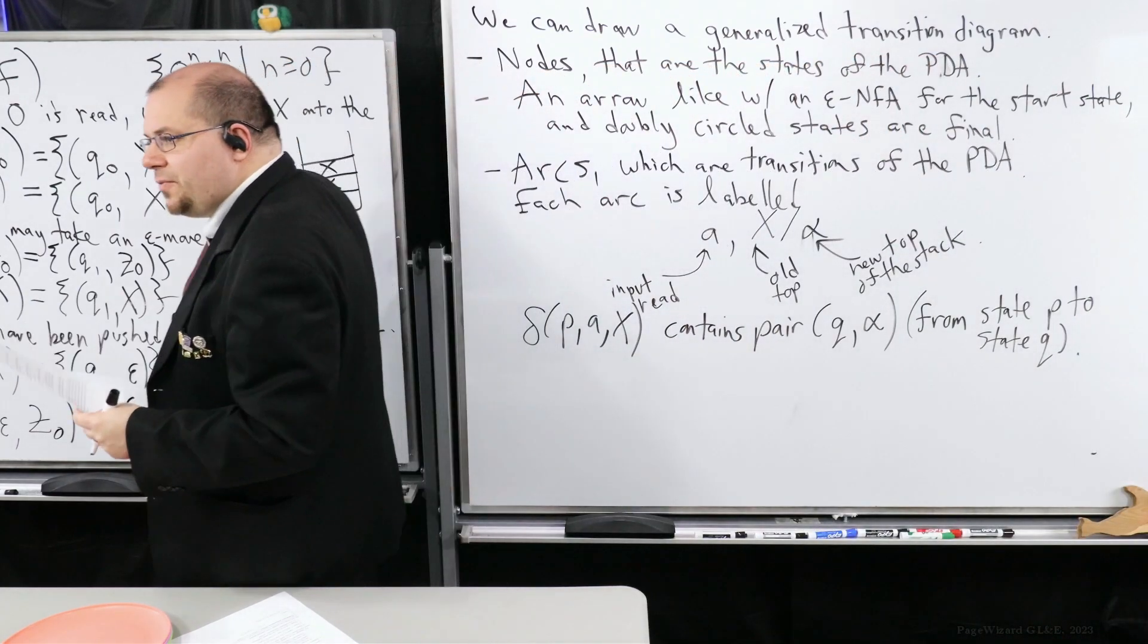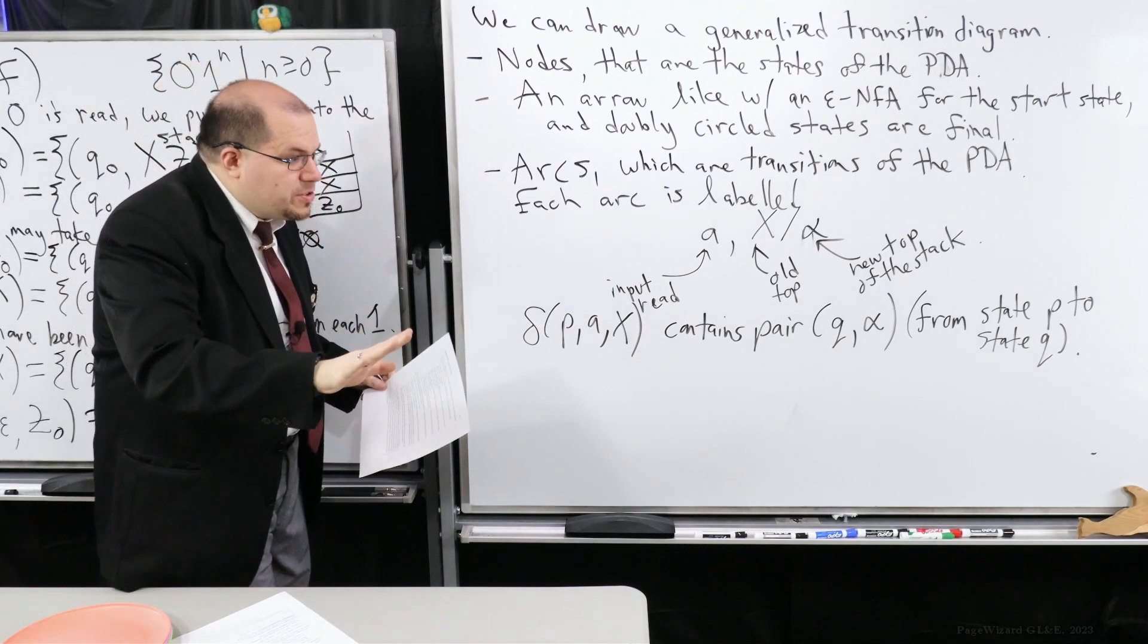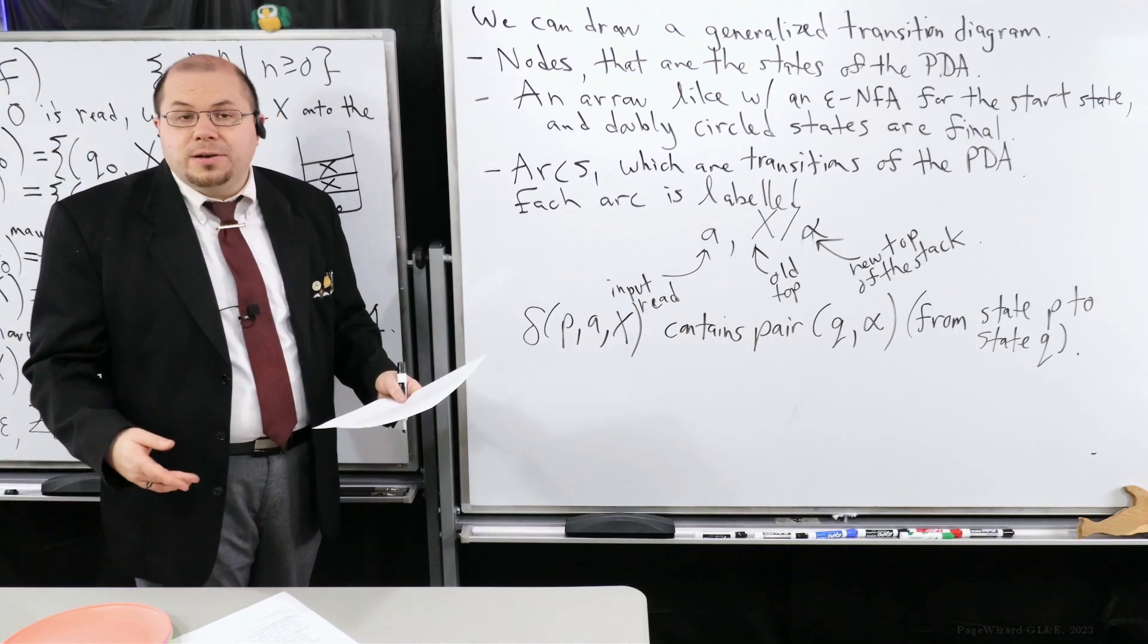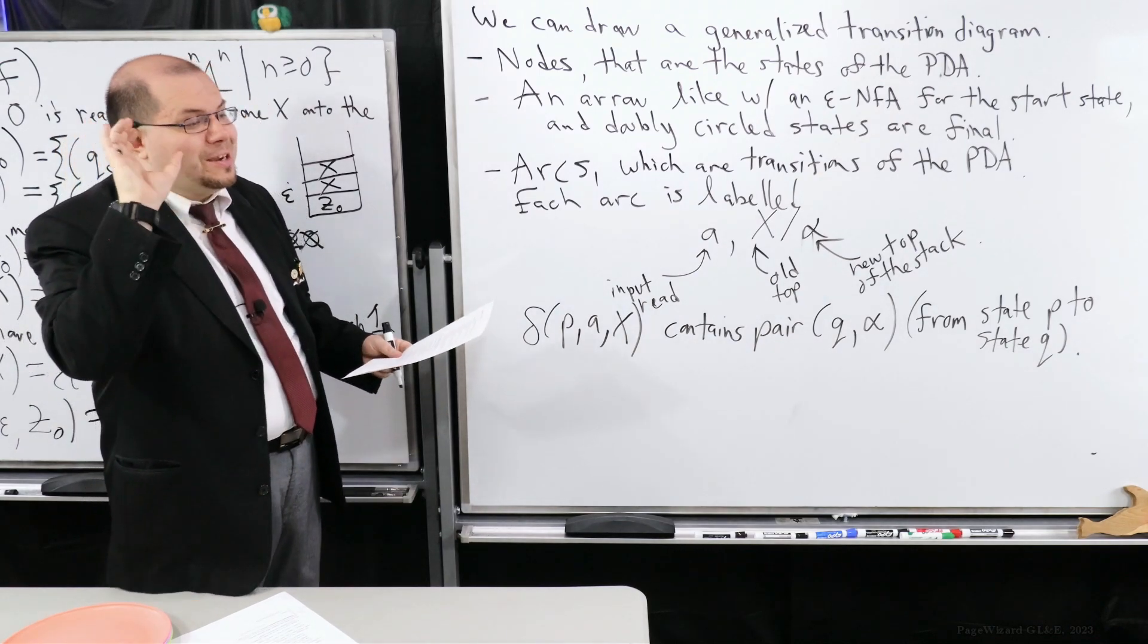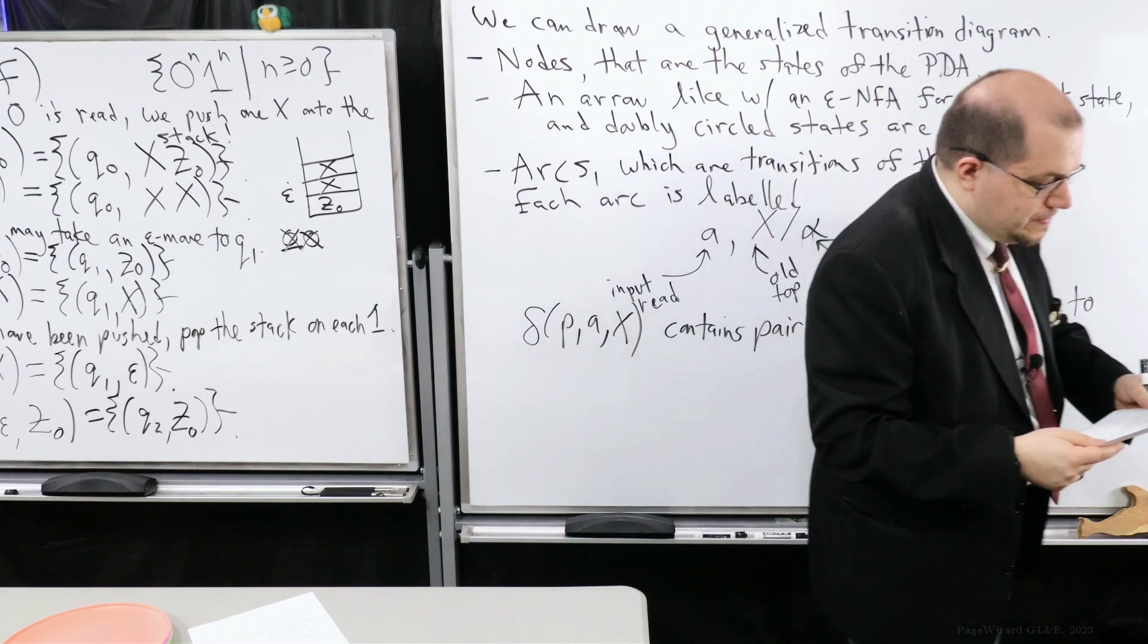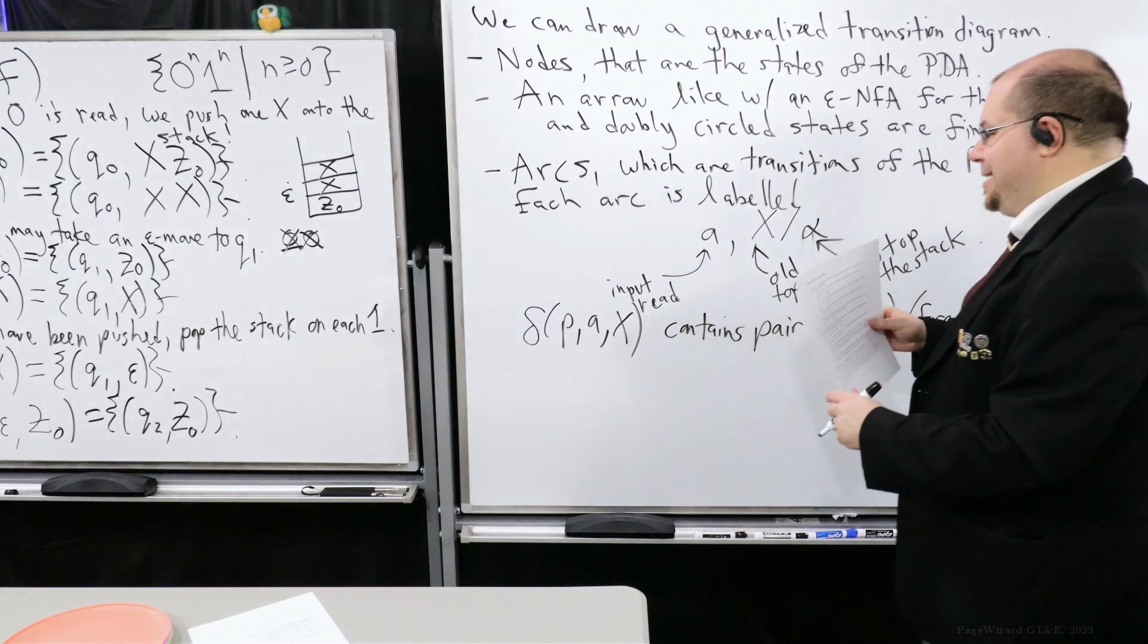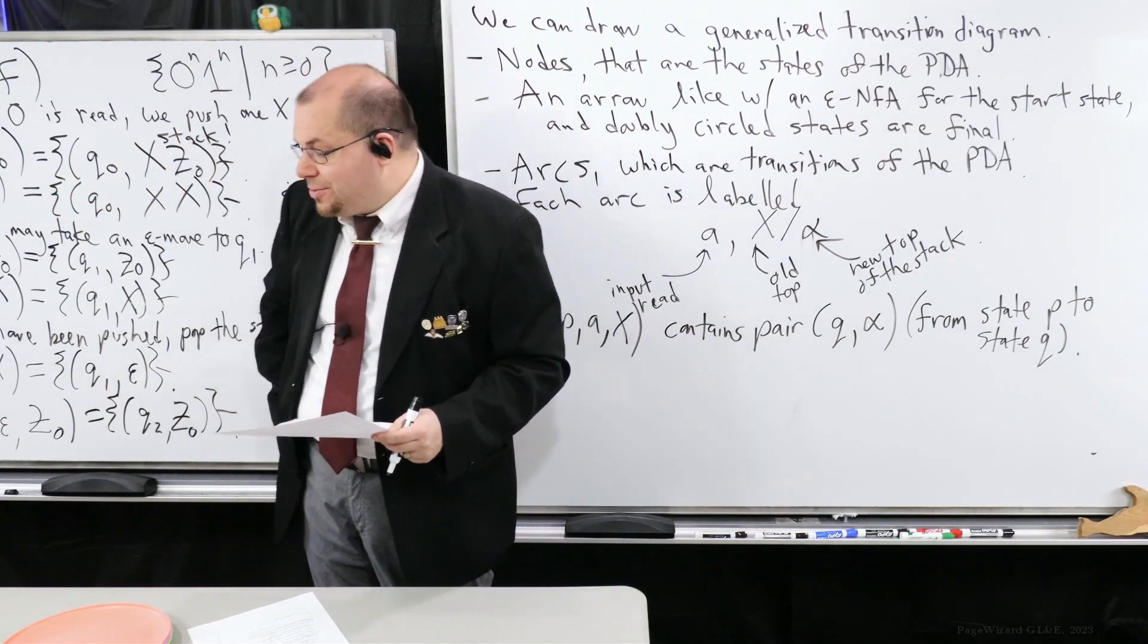So one thing I need to be careful about and I'll mention this as an aside is that normally we're going to presume that the start symbol is already on the stack. If ever it's unclear to your reader, please specify what the start symbol is. For example, some people define PDAs where there is no start symbol. Instead, it always starts off with an empty stack. Some people define it like that. We won't here. So just always assume that Z0 is always the start symbol and it's on the stack at the beginning.